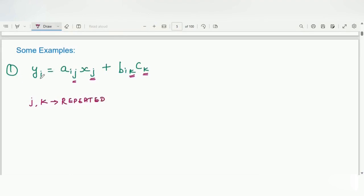And i, it has been repeated once here, once here, once here. Whether it has been repeated in each and every term, yes. In LHS it has been repeated once. In RHS also, there are two terms. It has been repeated in each and every term, so i can be accepted as the free index.